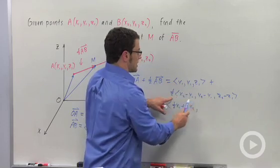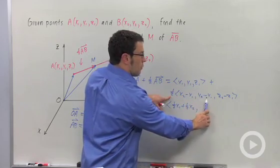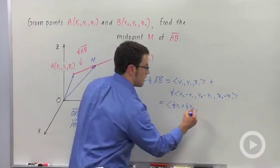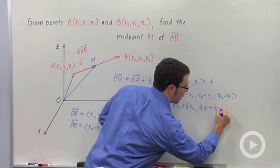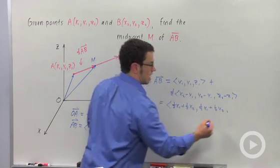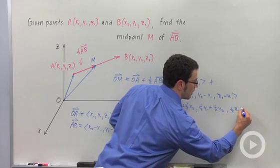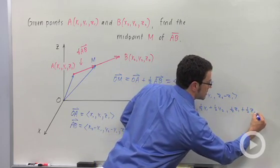Now I'll get y₁ plus a half y₂ minus a half y₁. That's one-half y₁ plus one-half y₂. And similarly, I get one-half z₁ plus one-half z₂.